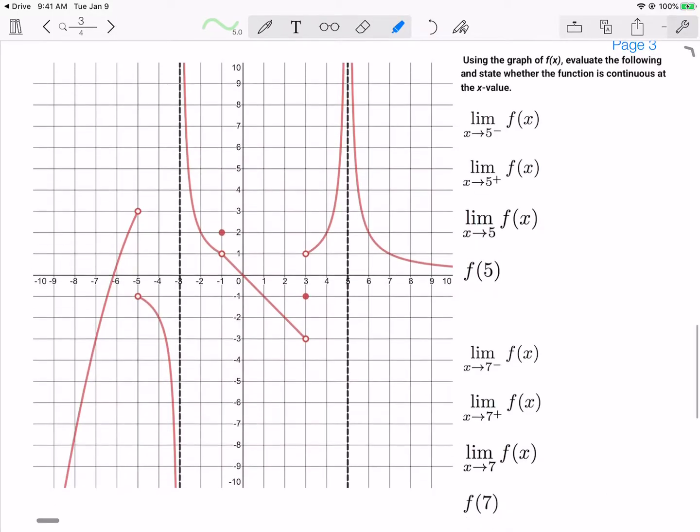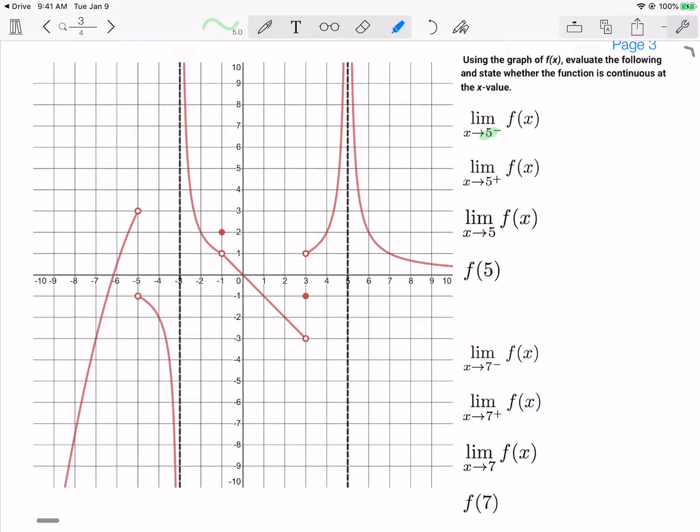Now we move on to 5 from the left. As we approach 5 from the left and 5 from the right, both of these are going to positive infinity. Therefore, the limit as x goes to 5 is also positive infinity. Though sometimes people may say the limit doesn't exist because it's not a finite number, I can still say it's infinity because those are both approaching the same sign of infinity.